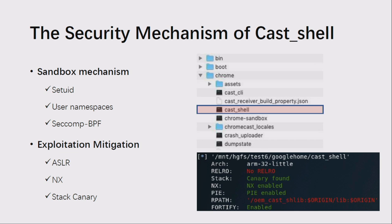Looking at the main programs in the firmware, it has a directory structure containing a main program called Cast Shell. The program is like Chrome, so it is protected by a sandbox. On Chrome OS, the sandbox mechanism mainly includes setUID, user namespace, and seccomp BPF. In addition, the system also enables ASLR, and Cast Shell adds NX and stack canaries.